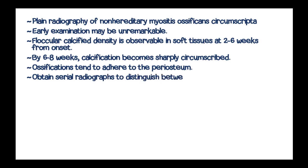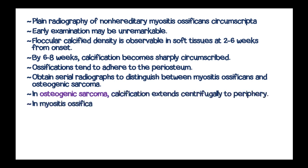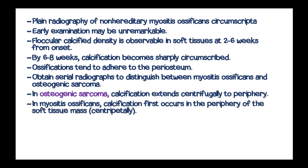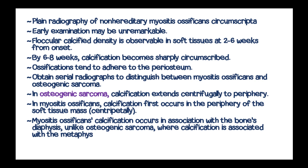Obtain serial radiographs to distinguish between myositis ossificans and osteogenic sarcoma. In osteogenic sarcoma, calcification extends centrifugally to the periphery, while in myositis ossificans, calcification first occurs in the periphery of the soft tissue mass. Additionally, myositis ossificans calcification occurs in association with the bone's diaphysis, unlike osteogenic sarcoma where calcification is associated with the metaphysis.